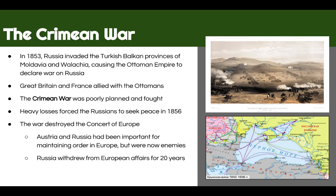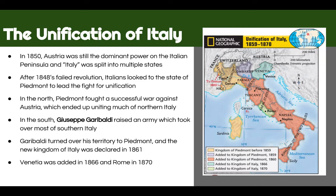The long-term effects are that the Concert of Europe — where countries were working together to establish a balance of power — is going to be destroyed. Austria and Russia, who were very important strong nations looking to maintain order, are now enemies. Russia will largely withdraw from European affairs for about the next 20 years. No longer will countries come to each other's aid to put down rebellions, as we saw with Russia putting down a Hungarian nationalist revolt in Austria in our last video.